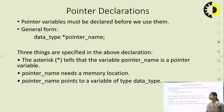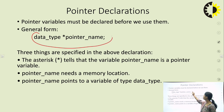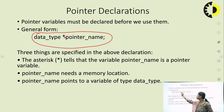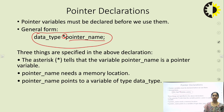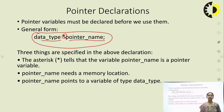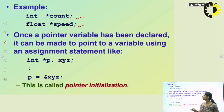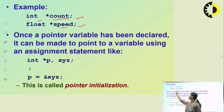Coming to pointer declaration, pointers are declared in this format: data type, then an asterisk which denotes a pointer, then the variable or pointer name. The asterisk tells the compiler that this variable is a pointer variable. The pointer name needs a memory location — it will store a memory address. The pointer name points to a variable of a specific data type, so data types must match. For example, we can make a pointer variable of int type or a pointer variable of float type.